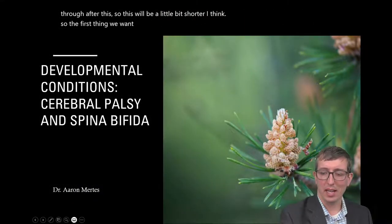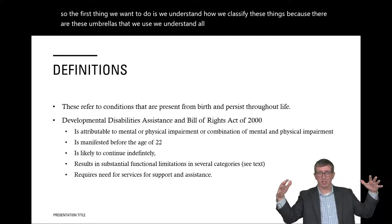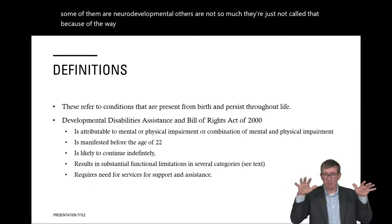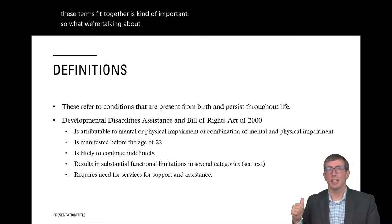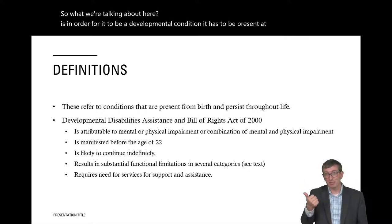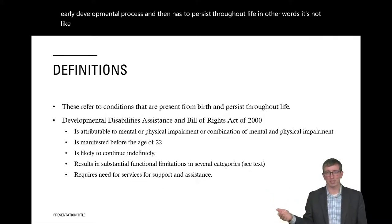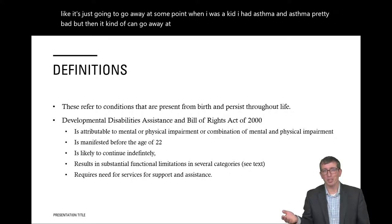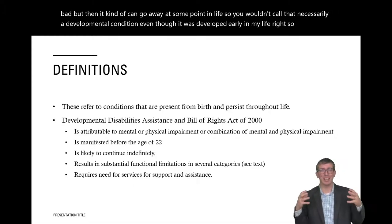We want to understand how we classify these things, because there are these umbrellas we use. Some developmental conditions are neurodevelopmental, others are not — just because of the way they show up. For it to be a developmental condition, it has to be present at birth, part of the early developmental process, and it has to persist throughout life. Asthma, for example, can go away, so you wouldn't necessarily call it a developmental condition.